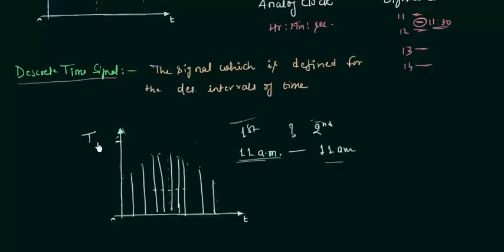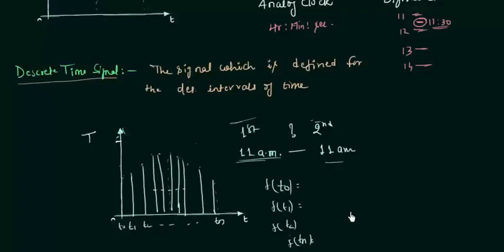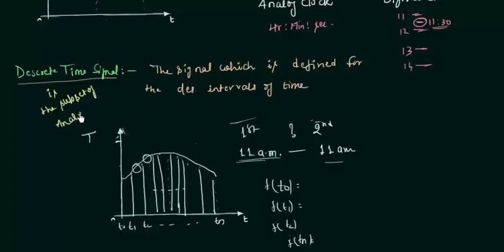We have the definition of the function — in this case the temperature — only for discrete time values: T0, T1, T2, all the way to Tn. What is between T0 and T1? We don't know, because we have not monitored the function for that particular time. This is what a discrete time signal looks like. One important thing to note is that the underlying signal is actually analog — the change is definitely analog — but we have not monitored those sections. So we have a discrete time signal, and the discrete time signal is a subset of the analog signal.